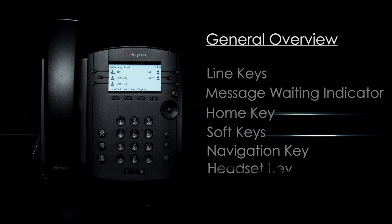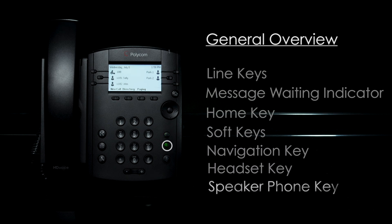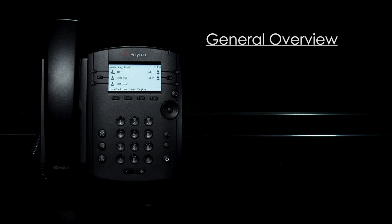If a compatible headset is connected, the headset key can be used to answer and hang up calls. The speakerphone key will activate the built-in speakerphone function. The mute key will mute the microphone on the phone or headset — you will still be able to hear audio from the other party.